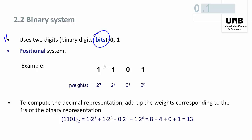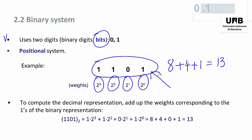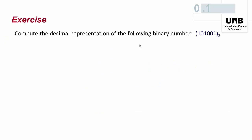Let us see an example. The binary number 1101 represents one times two to the power three — that is to say eight — plus one times two to the power two, plus zero times two to the power one, plus one times two to the power zero. So this is eight plus four plus one, equal to 13. This binary vector is the binary representation of decimal 13.